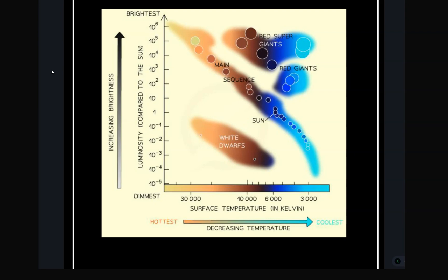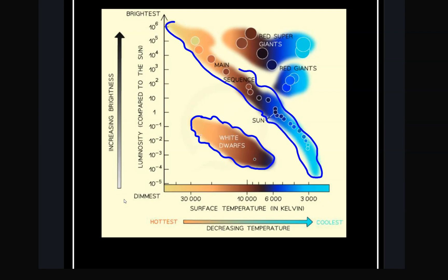Here I've displayed a representation of an HR diagram. You need to understand the different regions. We have four main regions: we have the white dwarfs, the main sequence where most stars are — and currently the Sun is in the main sequence stage — the red giants, and finally the red super giants.